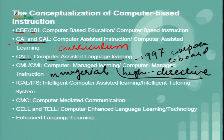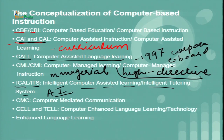Coming to the next acronym: ICAL stands for intelligent computer-assisted learning, and ITS stands for intelligent tutoring system. These concepts are important because they are grounded in the theory and technique of artificial intelligence. Since artificial intelligence is a recent development, it is getting exponential growth in language teaching and learning. For example, it first builds a model of what the student knows at a specific time and then provides instructions accordingly. It also provides natural language processing, referred to as NLP, offering a better platform for human-computer interaction.